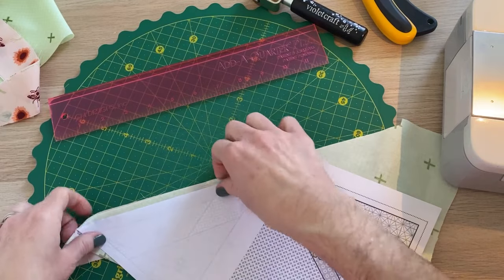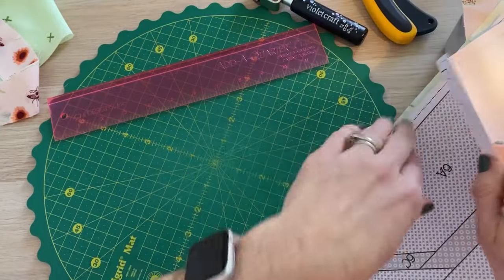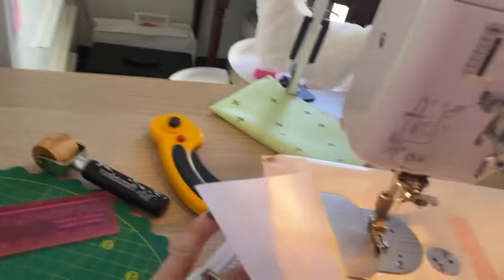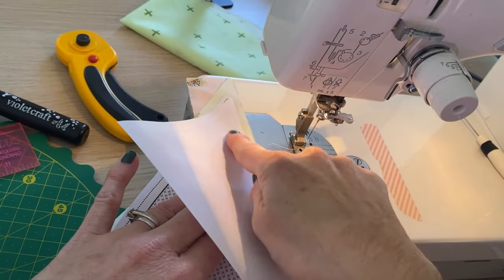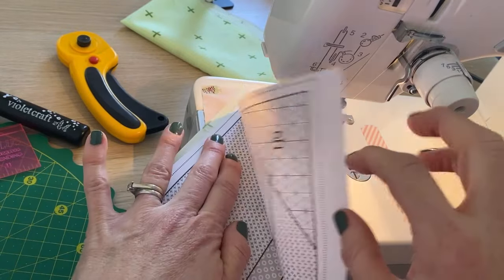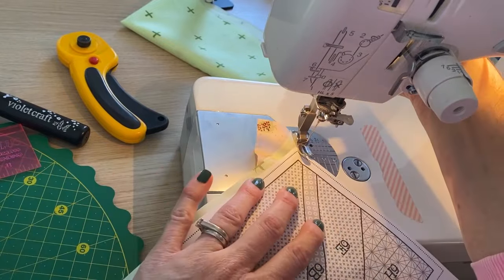Right sides together, lined up. We move it to our machine. So we're right sides together still with our seam allowances lined up. We're going to open our template and we're going to sew.